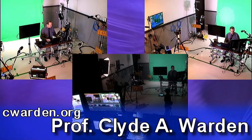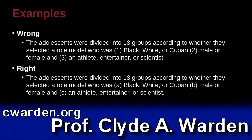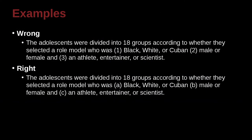Now we're going to look at some examples of this fairly straightforward topic of headings and numbers. The adolescents were divided into 18 groups according to whether they selected a role model who was: one, black, white, or Cuban; two, male or female; and three, an athlete, entertainer, or scientist.